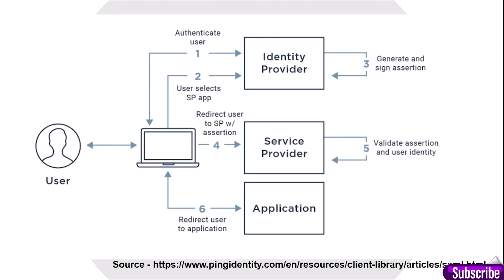Here is another diagram where we can understand how SAML works. You can pause the video and look at the diagram properly. First, the authentication process happens. Then the user accesses the service provider. Then generate and sign assertion happens. After that, redirect the user to the service provider assertion happens. Then validate assertion happens. Finally, the user is redirected to the application.